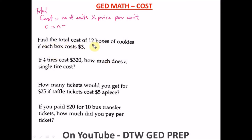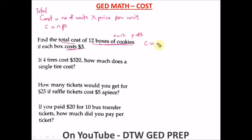The first example: find the total cost of 12 boxes of cookies if each box costs three dollars. The number of units N is 12, and the price per unit P is three dollars. Using our formula C equals N times P, we have 12 times 3, which gives us a total cost of 36 dollars.